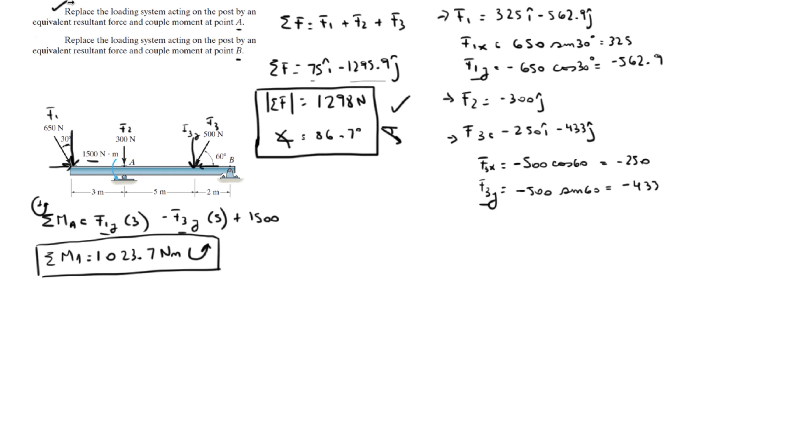Now that's it for the first one. Now for the second one we have to find the resultant force, which is the same one we already found, and the sum of the moments about B, assuming counterclockwise is positive.